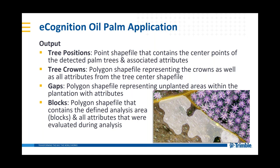New in eCognition 1.3 is gaps — as we can see in the screenshot in the lower right-hand corner, it's a polygon representing unplanted areas within the plantation. We export attributes such as area so that an operator knows how much land within their plantation is available for planting. Also, the blocks themselves — how plantations are split up into different groups — are available as a polygon shapefile containing statistics of the attributes evaluated above, including number of trees per block, large trees, small trees, and stressed trees.